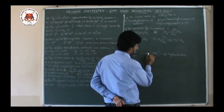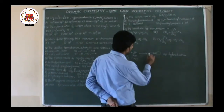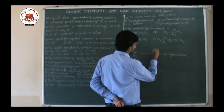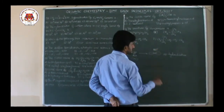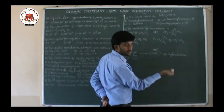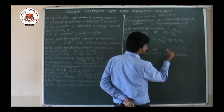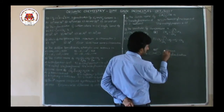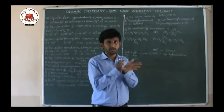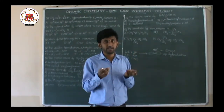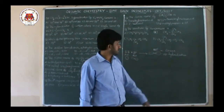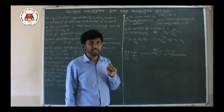In SP hybridization, when one S atomic orbital mixes with one P atomic orbital, it produces two hybrid orbitals. The bond angle between the two hybrid orbitals is 180 degrees, meaning they are arranged in a straight line. So if any atom of a molecule is in SP hybridization, its geometry is linear.